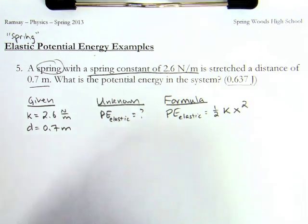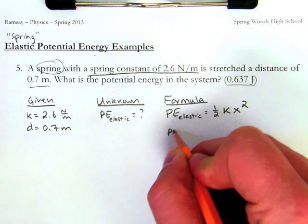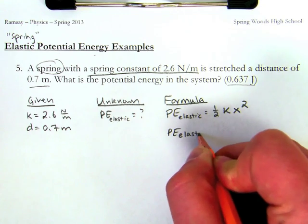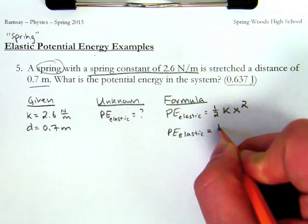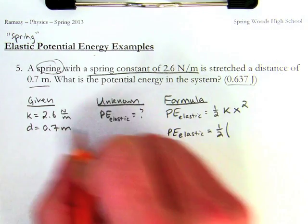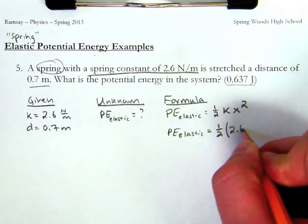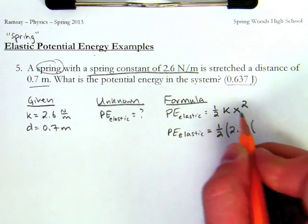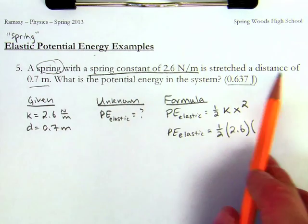So as I make my substitution, I leave my potential energy here because that's what I'm solving for. It equals one-half of k, which here is 2.6, times x. Now, I know I'm in the habit of writing down distance with d.